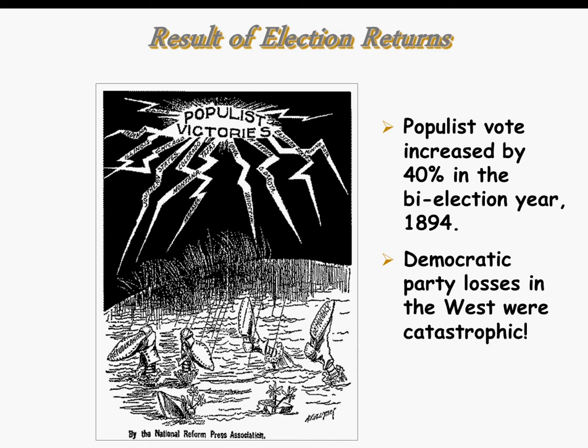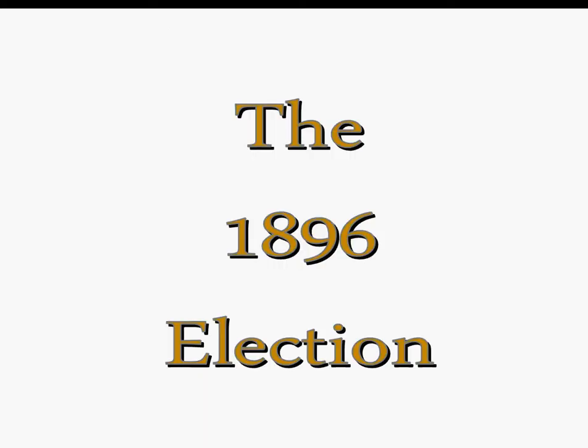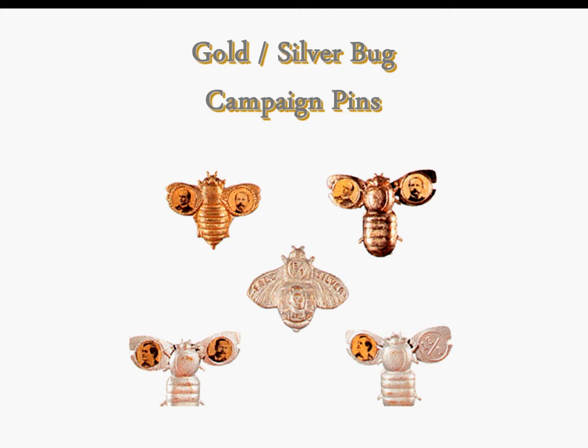The Democratic Party lost most in the West, but the Republicans will control the House, so things are still firmly controlled by the Republicans. The election of 1896 comes along. This is really the demise of the Populist Party, because they're going to throw their support to William Jennings Bryan.